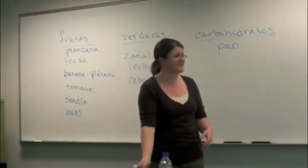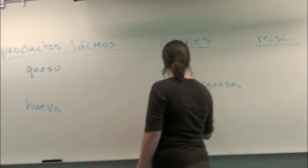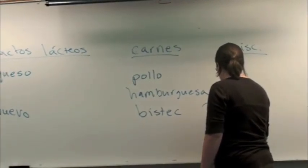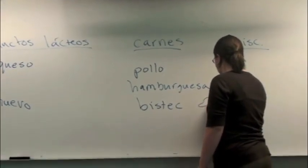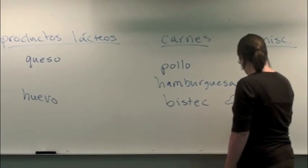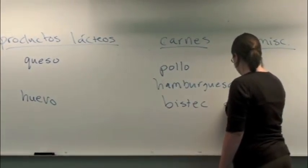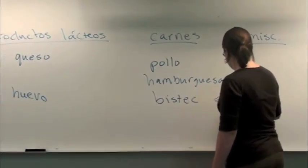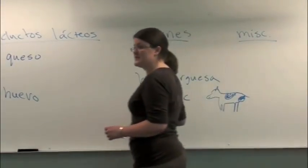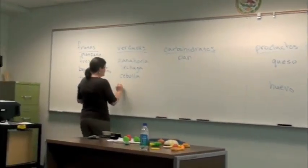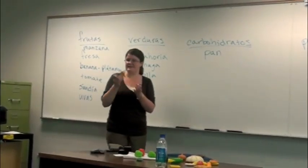Es bistec — es una carne, ¿sí? Es carne que viene de la vaca. Es una vaca muy fea. Bistec. Y luego tenemos unas papas. Pero estas son papas fritas, ¿sí? Son papas fritas que muchas veces comemos con una hamburguesa.